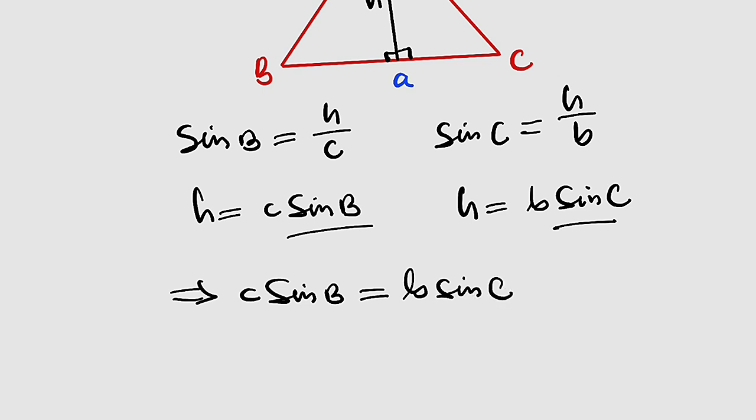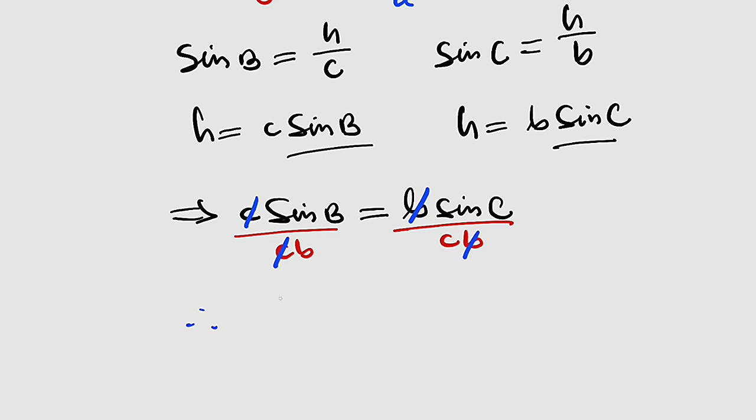Now I would like to divide both sides by cb, cb, b. From left to right, you can see that this is c, this is c, they will cancel. This is b, this is b, they will cancel. And finally, you can see that sine of capital letter B, which is the angle B, divided by its opposite side, which is b, is equal to sine of angle C divided by the opposite side c.